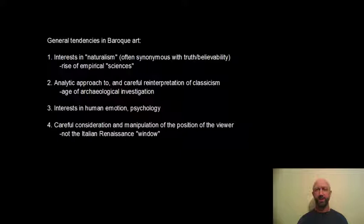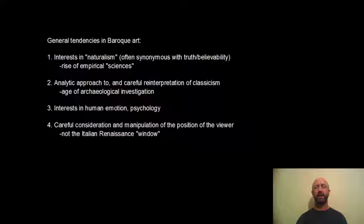Keep in mind that the stories keep getting told — you've seen a million annunciations, a number of crucifixions, but they get told quite differently. The way they're told differently is through how the artist chooses to employ the formal elements of art. In the Baroque period, some stylistics we associate with the period regardless of country include: number one, an interesting naturalism, often seen as synonymous with truth or believability — believable figures in believable spaces, so as to make you think this could have really happened. This interest in naturalism also coincides with a general interest in the empirical sciences.